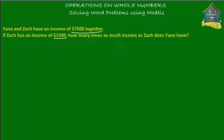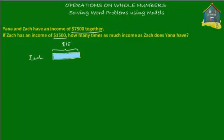Let's start with our model diagram as usual. Let's say that Zach is represented by this box of money. This box is Zach's income, so let's put down Zach's name next to it and fill it blue. Zach's income, we know, is $1,500 — that's given to us in the problem. So Zach is earning $1,500.